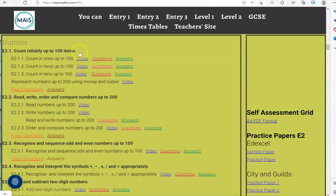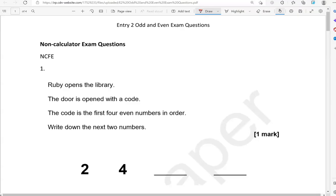You can locate the questions on the maismas.com website under entry 2. The questions are from different exam boards. We'll start with the non-calculator questions and then we'll move to the calculator questions. Let's start with the first question which happens to be from NCFE.